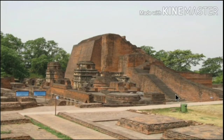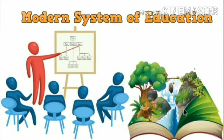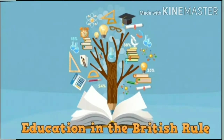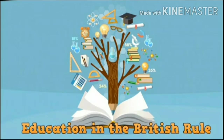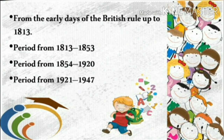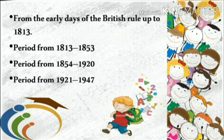Various universities and thousands of colleges were formed and the popularity of education increased. Education in the British rule can be divided into four periods: first, from the early days of British rule up to 1813; second, from 1813 to 1853; third, from 1854 to 1920; and fourth, from 1921 to 1947.